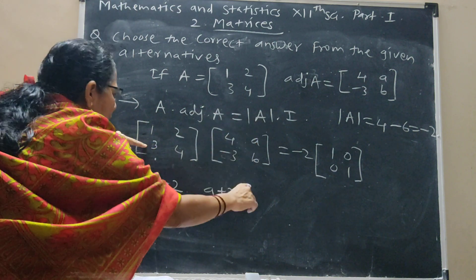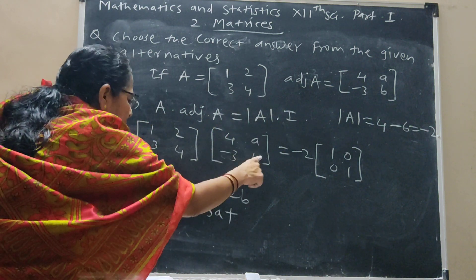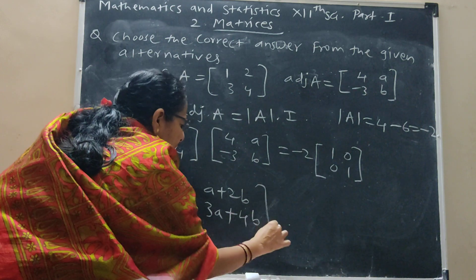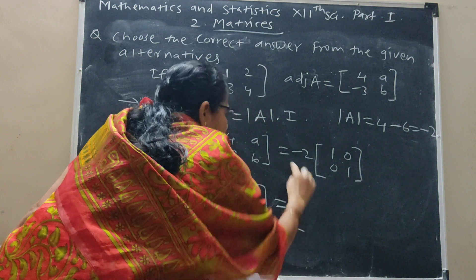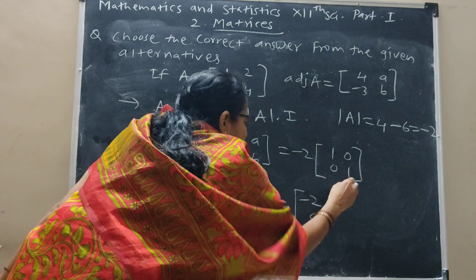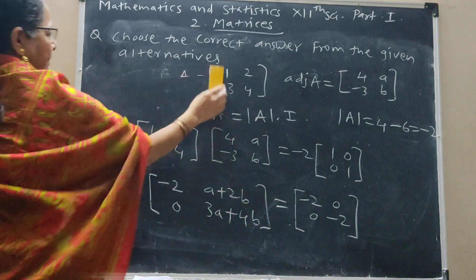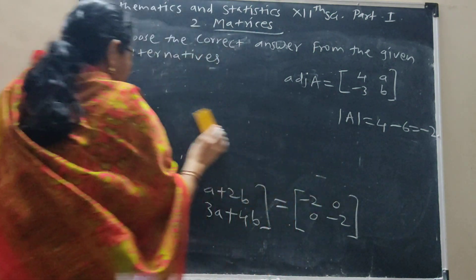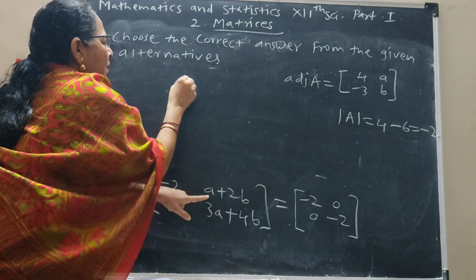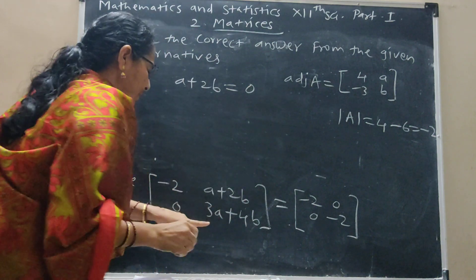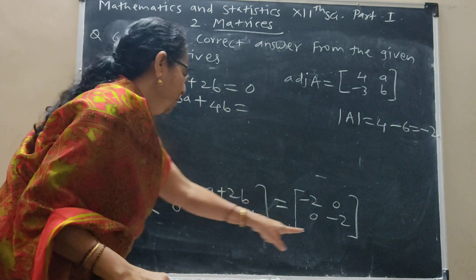This row, this column, 3A plus 4B. This row, 3A plus 4B. This row, 2A plus 4B. This is equal to minus 2.